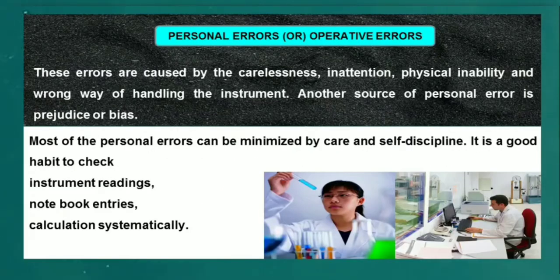The third type is personal errors or operative errors. These errors are caused by carelessness, inattention, physical inability, and wrong way of handling the instrument. Another source of personal error is prejudice or bias. Most of the personal errors can be minimized by care and self-discipline.